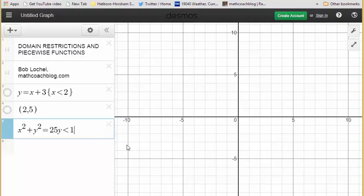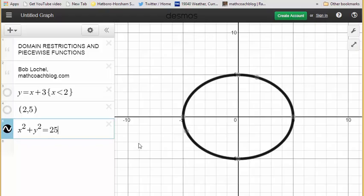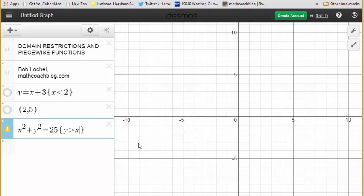One last thing that I think is kind of neat. Let's go back to my circle. I could also restrict it via a function. Let's say I only wanted to see the part of the circle where y is greater than x plus 1. So here's the line y equals x plus 1, this imaginary line.